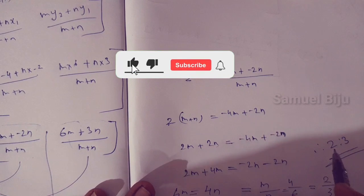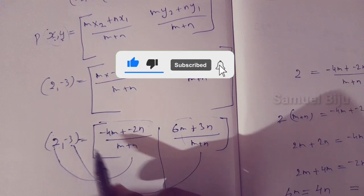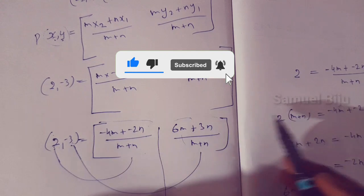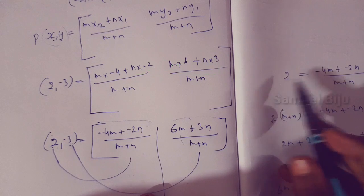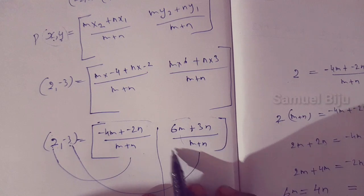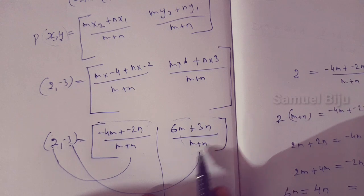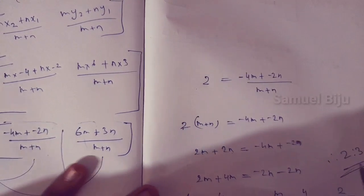So if we have this same question, the answer is that the ratio is 2 to 3, which equals this portion. We have the answer to this question.